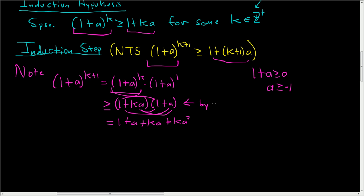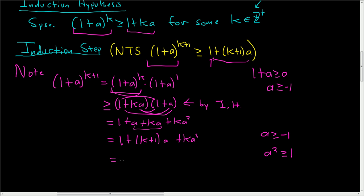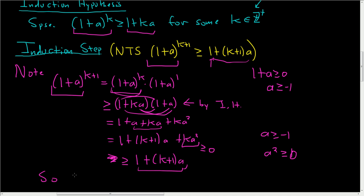So we want 1 + (k+1)a. We have the 1 here, and then k + 1 times a here. Then we have the straggler ka². Well, we know a is greater than or equal to negative 1, which means a² is greater than or equal to 0 — a could be 0, in which case this is 0, so we can certainly say ka² is greater than or equal to 0. Therefore the expression is greater than or equal to 1 + (k+1)a. So we've shown that (1 + a)^(k+1) is greater than or equal to 1 + (k+1)a, meaning S sub k+1 is true.